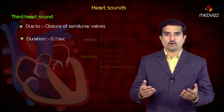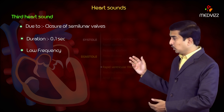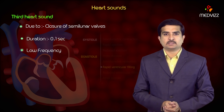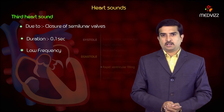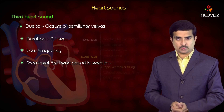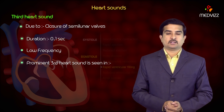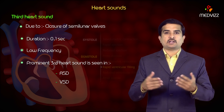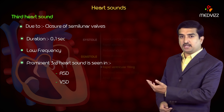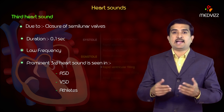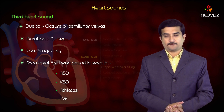The duration of the third heart sound is 0.1 second and the frequency is very low — it is not generally audible by stethoscope like the first and second heart sounds. A prominent third heart sound is more commonly seen in pathological conditions like atrial septal defect, ventricular septal defect, and physiologically in athletes, as well as in pathological conditions like left ventricular failure.